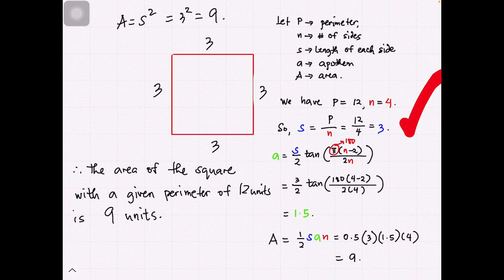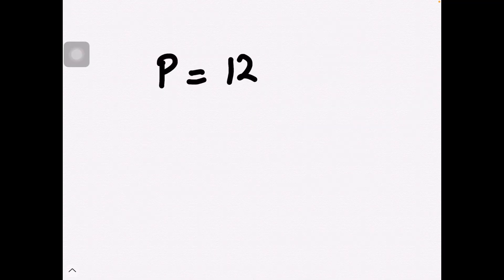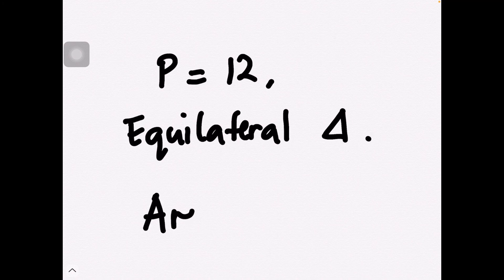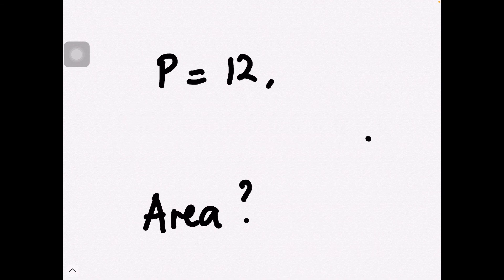This formula is really useful if you don't know the formula in getting the area of a given regular polygon. So this time, would you be able to answer this? That is, with a given perimeter of 12 units, would you be able to get the area of an equilateral triangle? How about the area of a regular pentagon with the same perimeter?